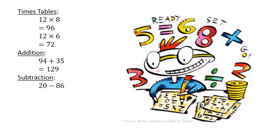Subtraction. 20 minus 86 equals negative 66.